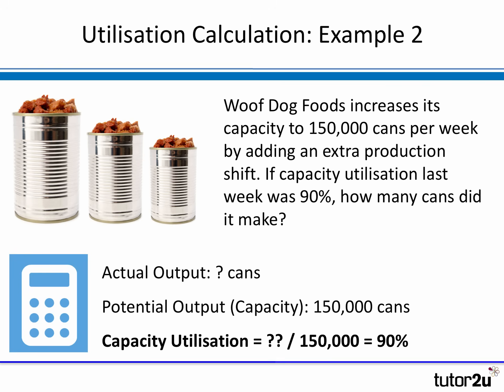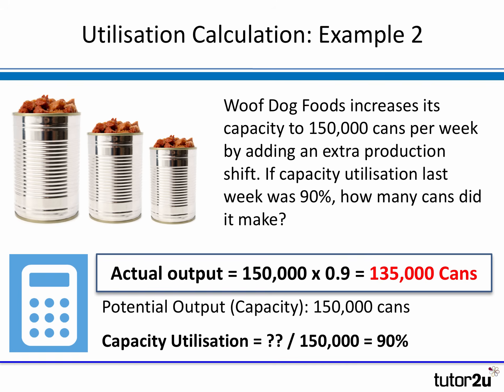Let's look at the answer. We're given the potential output — the capacity of 150,000 — and we're told the utilization was 90%. So we need to work out the actual output. We take the potential of 150,000 cans and multiply by 0.9 (90%), which comes out at 135,000 cans of dog food. That's how many cans Woof Dog Foods made last week at a 90% utilization rate based on a capacity of 150,000 cans.